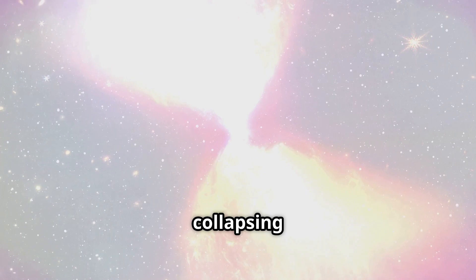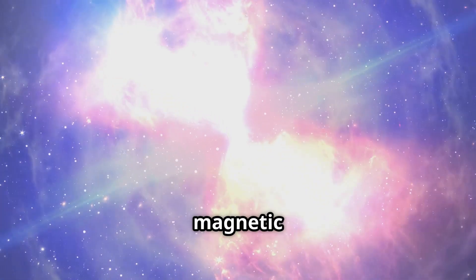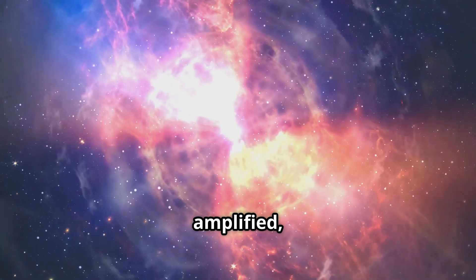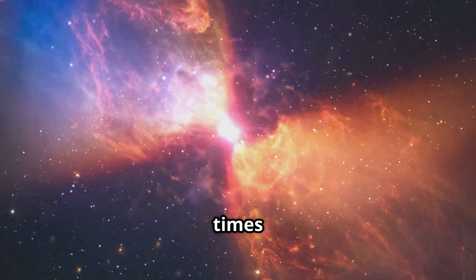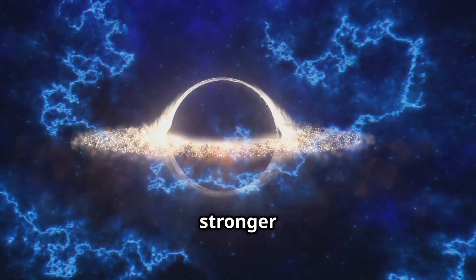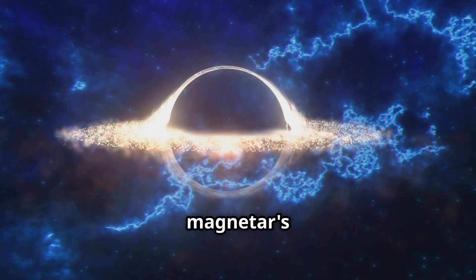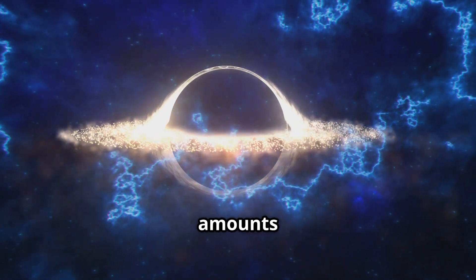They form when a collapsing star's magnetic field goes wild. During the collapse, the magnetic field lines get twisted and amplified, resulting in a magnetic field that is trillions of times stronger than Earth's. Their magnetic force can be a trillion times stronger than Earth's. This immense magnetic field can cause starquakes on the magnetar's surface, releasing enormous amounts of energy.